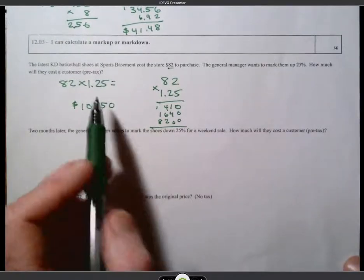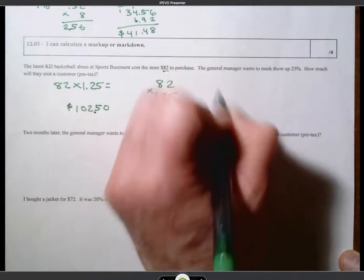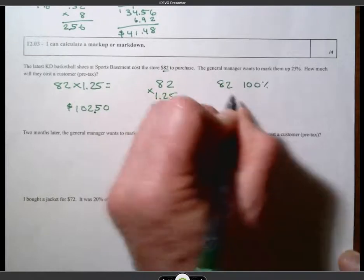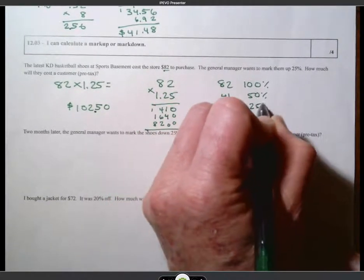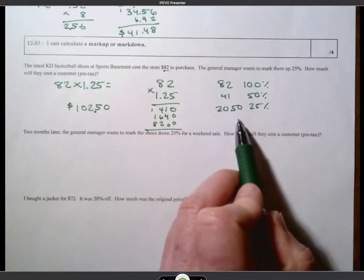The other way we could have done it is we just could have found 25% of 82. So what I like to do, if I know 82 is 100%, 50% would be half that. 25% would be half that. So 20, 50.